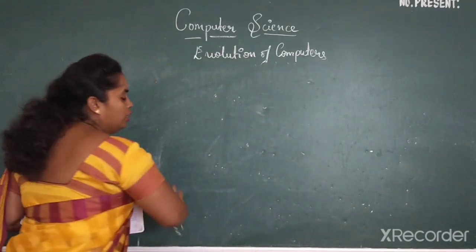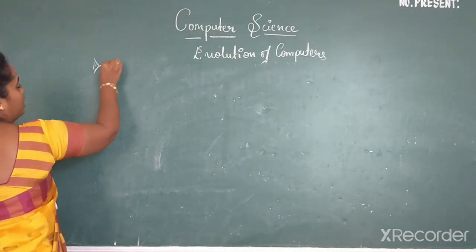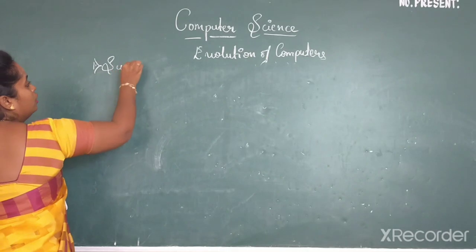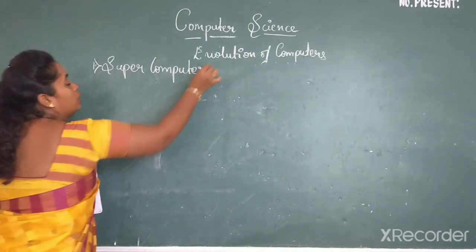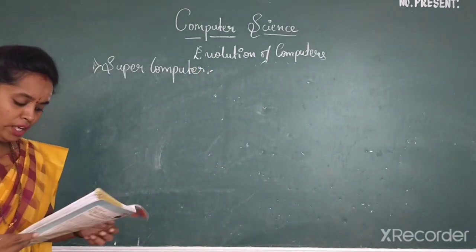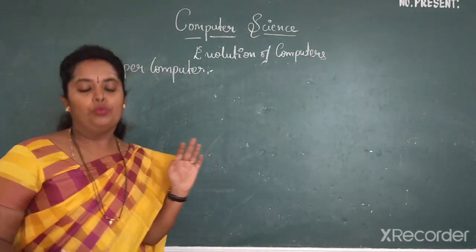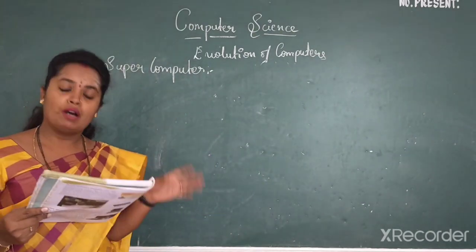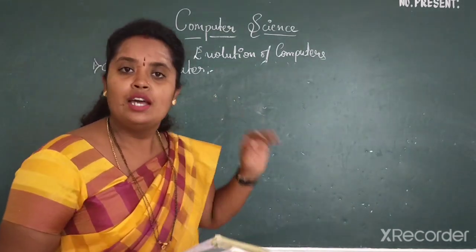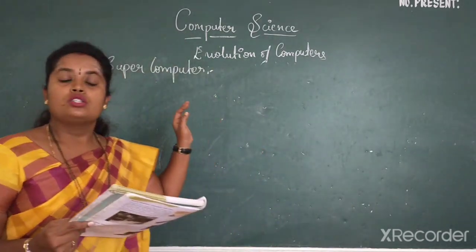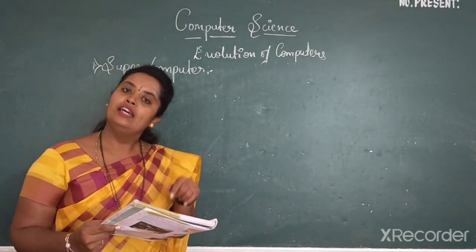After finishing the generation of computers, we will be moving on to different types of computers. The first one is your supercomputer. By the name itself you can know that this is most powerful computer in the world. They have a very large storage capacity. Param and Anurag were the two supercomputers which were developed in India.